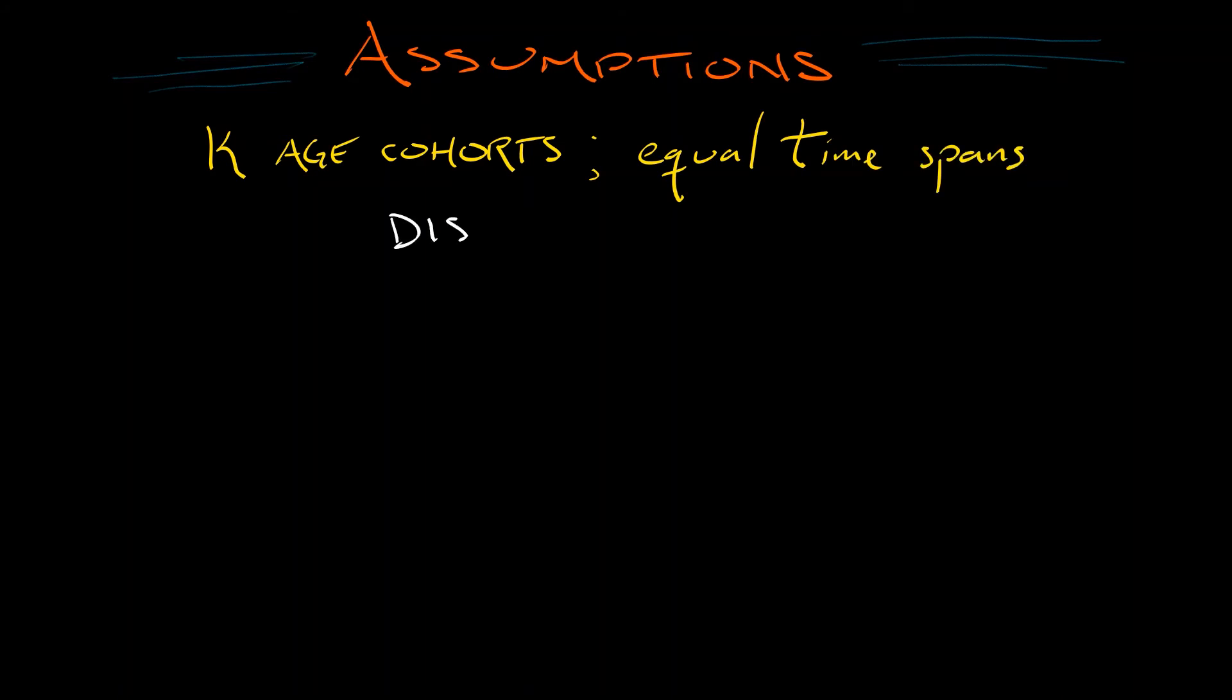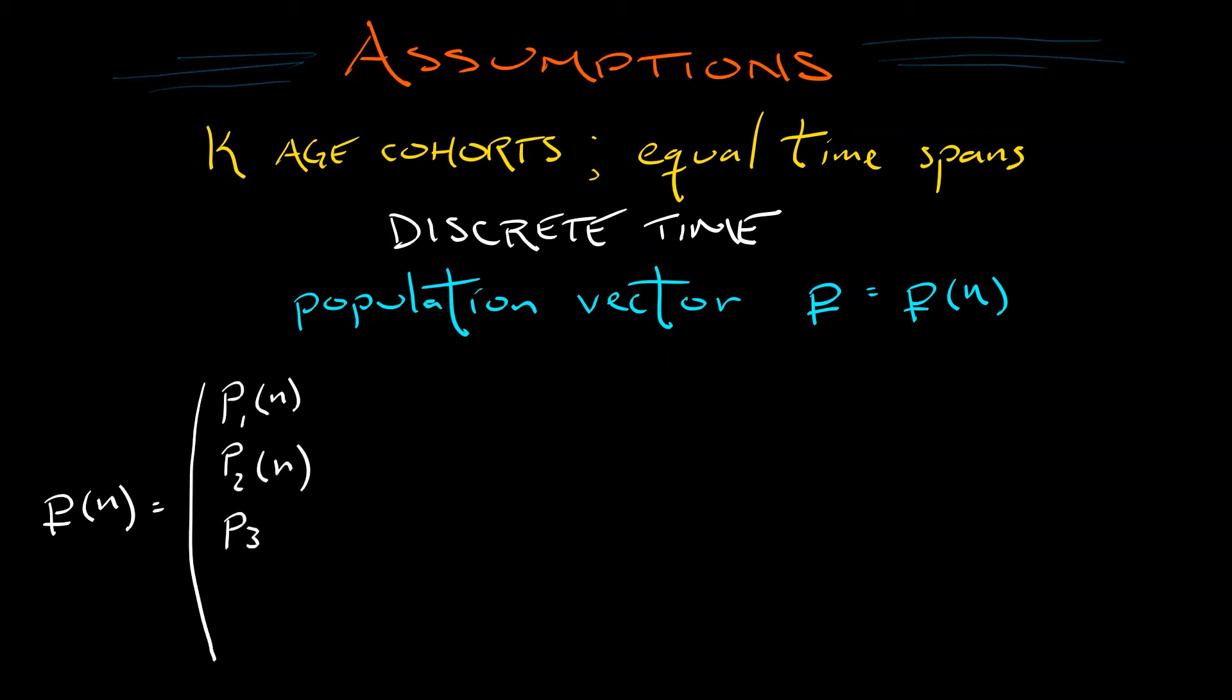Here's our assumptions. We're going to have k age cohorts with equal time spans. So we're going to partition that time interval evenly. And we're going to do dynamics in discrete time. We're going to keep track of our population sizes by means of a population vector p that depends on this discrete time n. So p of n is going to keep track of the sizes of the k different age cohorts at time n. So we have p1 of n, p2 of n, p3 of n, all the way up through pk of n.